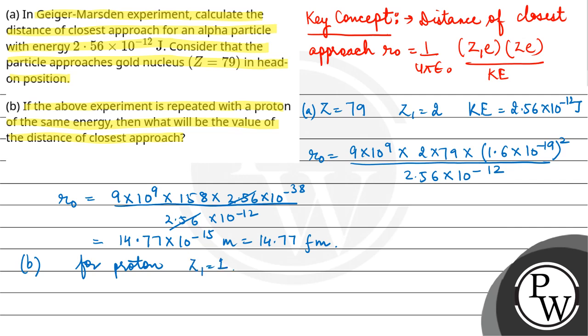The charge would be 1, so R₀ in this case will be half of the first value, equal to 7.4 femtometer. I hope you understood it. All the best.